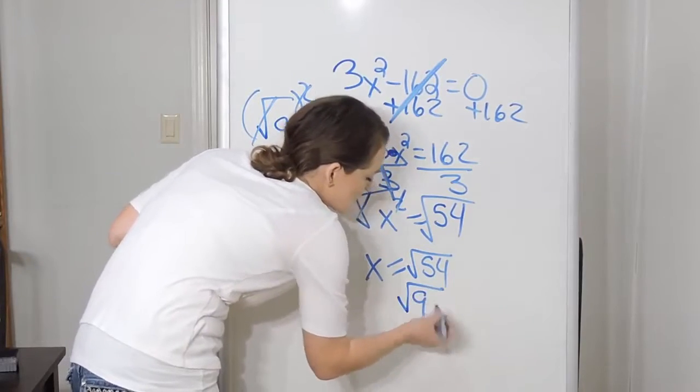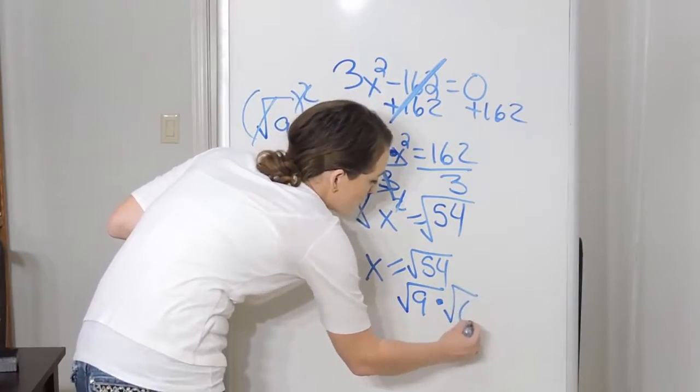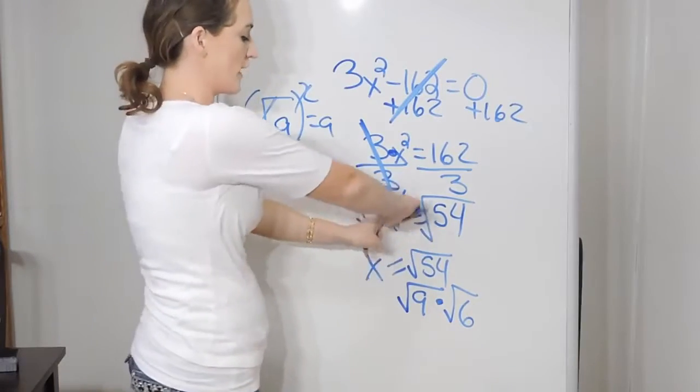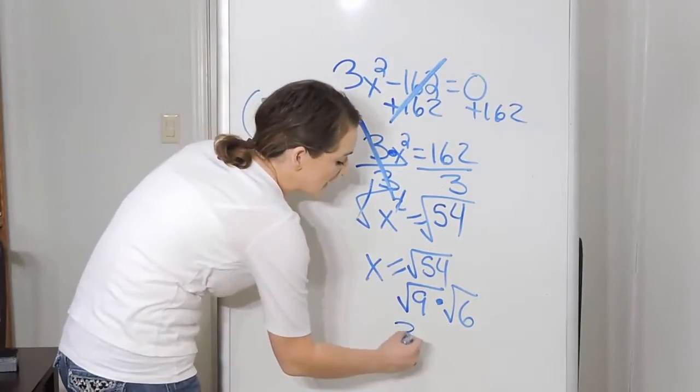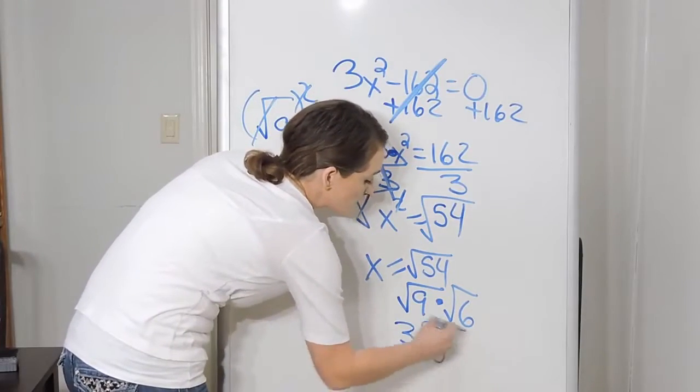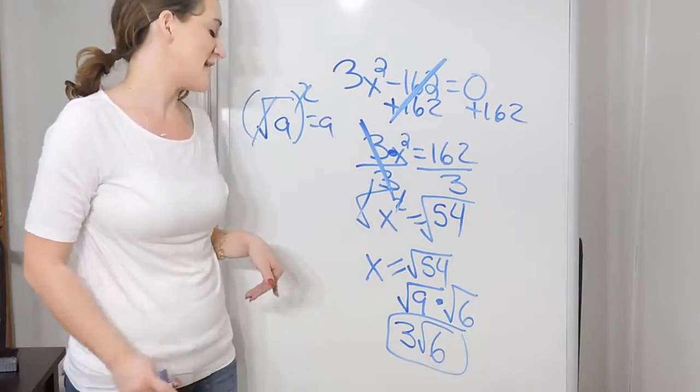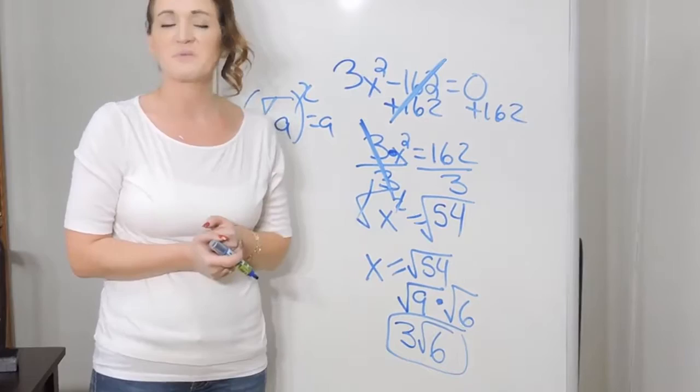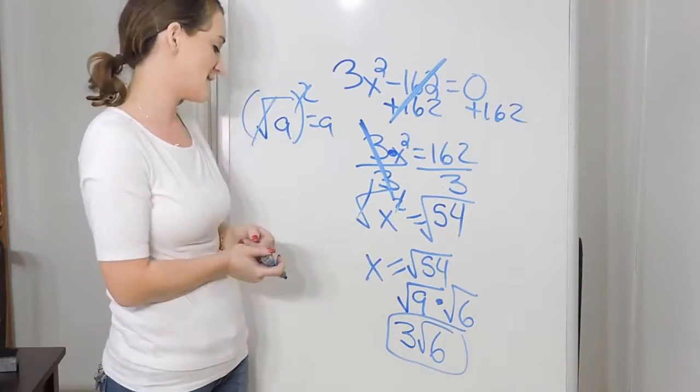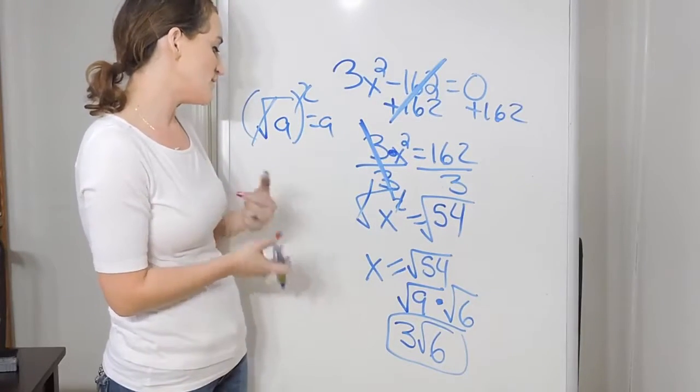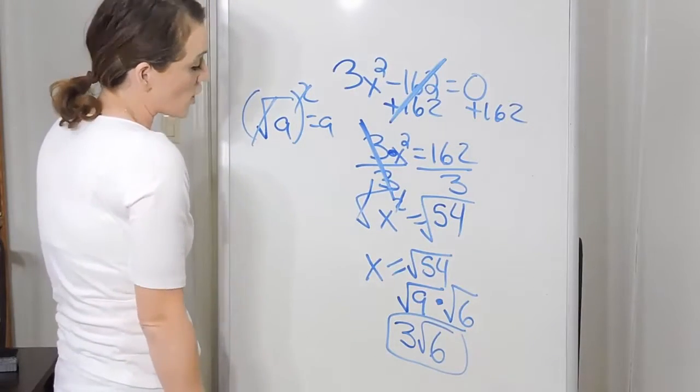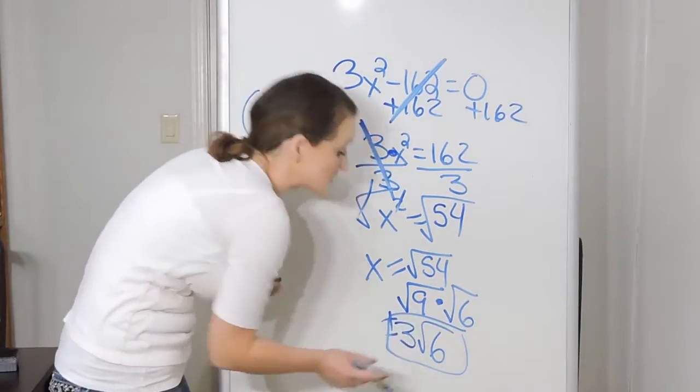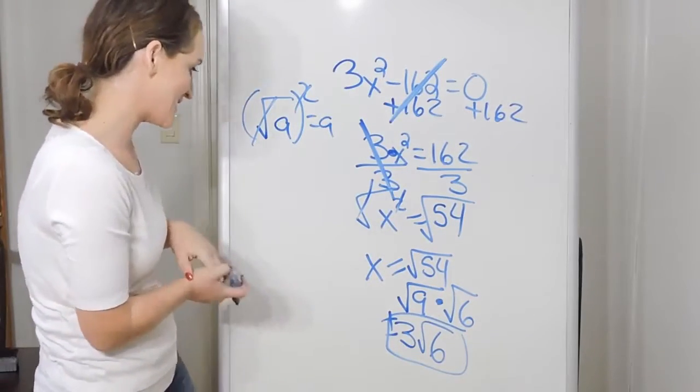So what I'm going to do is use the product rule of radicals that will let me take 54 and split it up to 9 times 6. The square root of 9 is 3, and the square root of 6 just drops down because that is already simplified. There's no further way to break that down. So my solution here is 3√6, or technically, I guess, plus or minus 3√6.